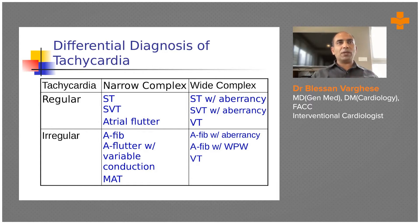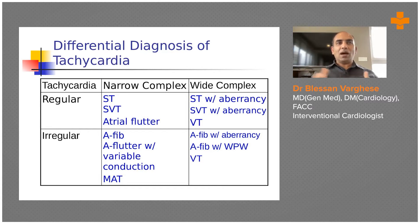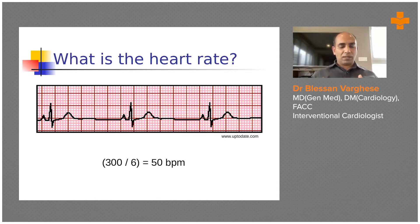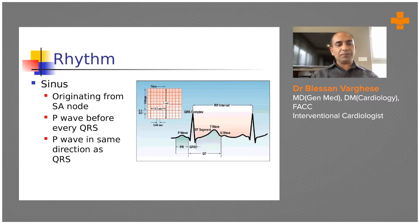This is a topic for later discussion — how to differentiate between wide complex tachycardias, including ventricular tachycardia versus other arrhythmias. Tachycardias can be categorized as narrow or wide complex, and as regular or irregular. Looking at this normal ECG, it appears regular, so you can apply the Rule of 300. There are six big boxes between two QRS complexes, giving a heart rate of around 50.